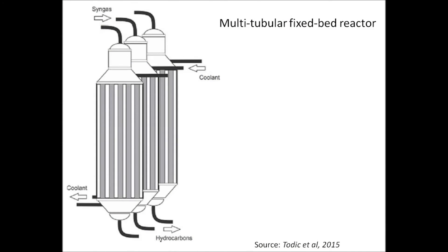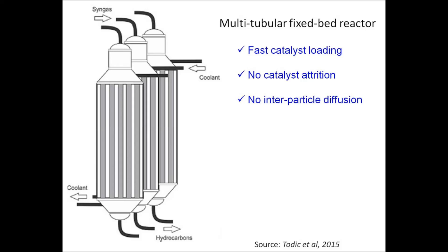Shell's gas-to-liquid process uses a multi-tubular fixed bed reactor. This reactor holds several advantages over other types of reactors, such as fast catalyst loading, no catalyst attrition, no inter-particle diffusion, no separation of catalysts, high liquid selectivity, high productivity, and easy operation.